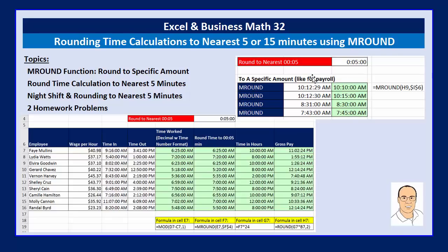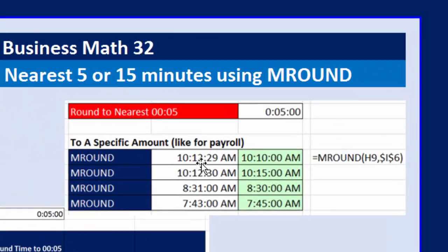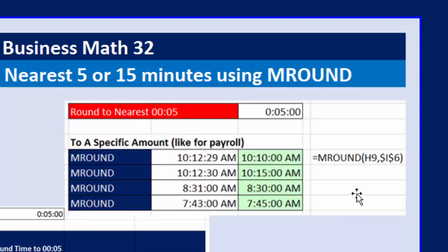mRound can take a time and round it to the nearest 5 minutes. So 10:12:29 — using the rounding rule up or down — goes down to the nearest 5 minutes because it's not halfway or more. 10:12:30 is exactly 2 and a half minutes between 10:10 and 10:15, so it gets rounded up to 10:15. And 8:31 would be rounded to 8:30, while 7:43 would be rounded to 7:45.